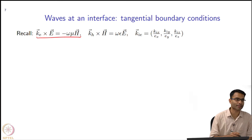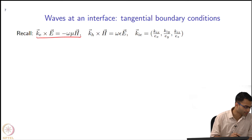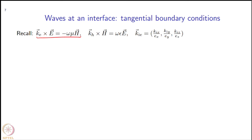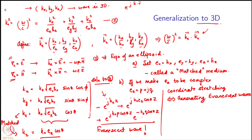For a plane wave it is exactly true. We had done this earlier also — curl of E was equal to minus omega mu h, right.